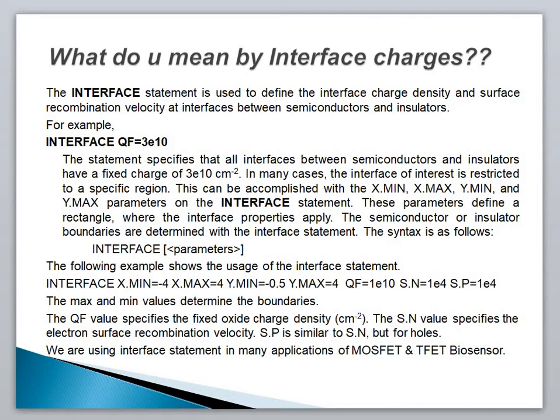This statement specifies that all interfaces between semiconductor and insulator have a fixed charge density of 3e10 per centimeter squared. If you do not mention any positional parameter, it will automatically apply to all regions of the Si/SiO2 interface, assuming charge density equal to 3e10.